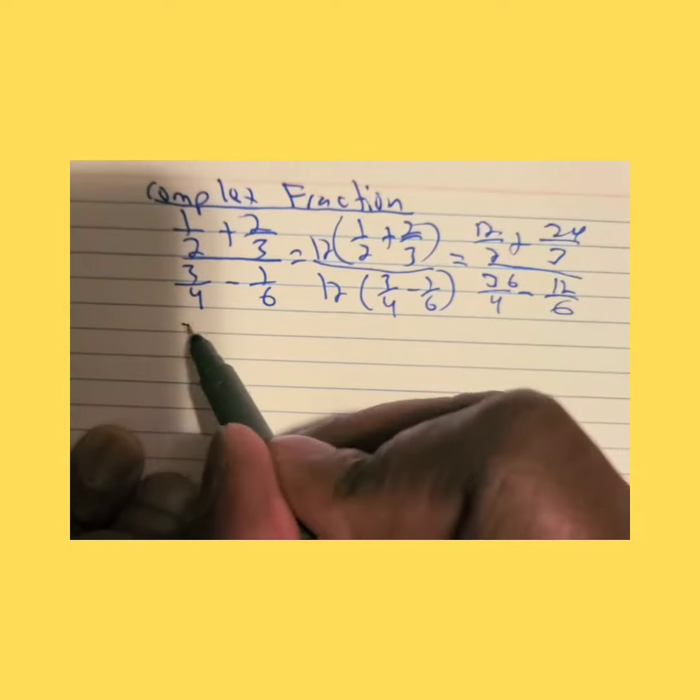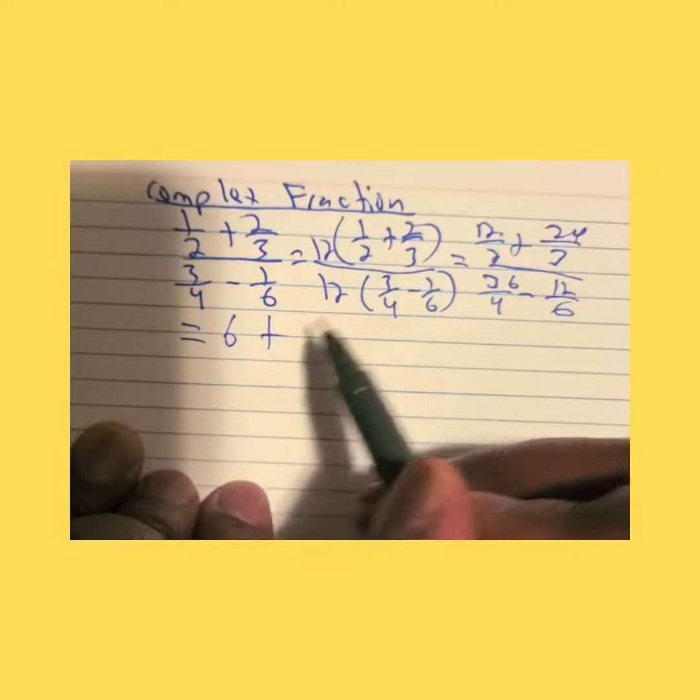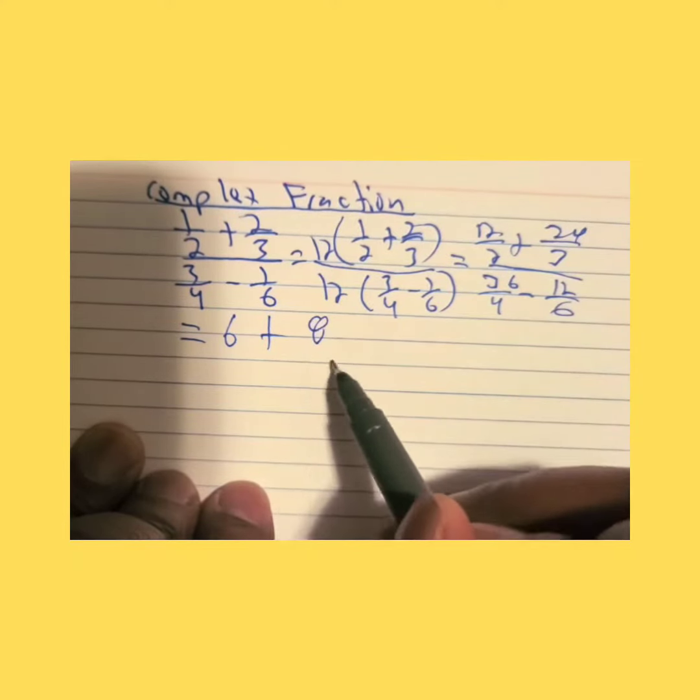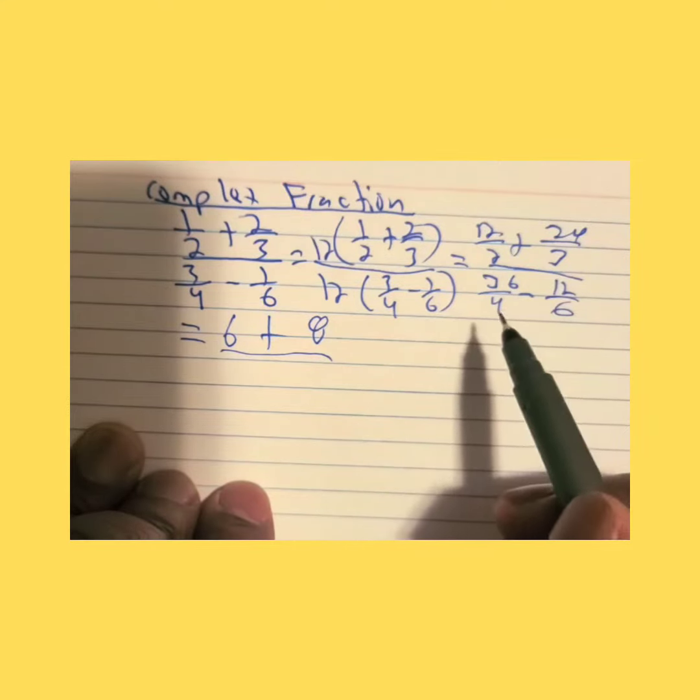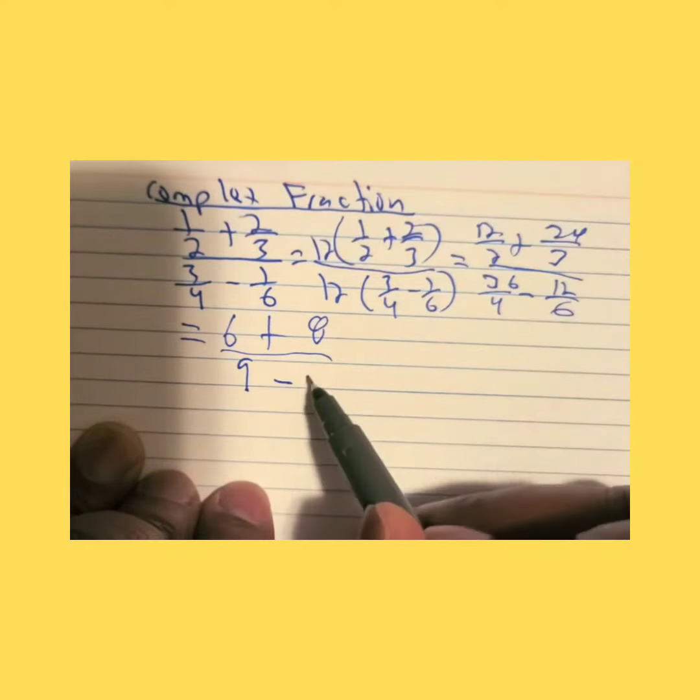So we're going to equal: 12 divided by 2 is 6, plus 24 divided by 3 is 8, over 36 divided by 4 is 9, minus 12 divided by 6 is 2.